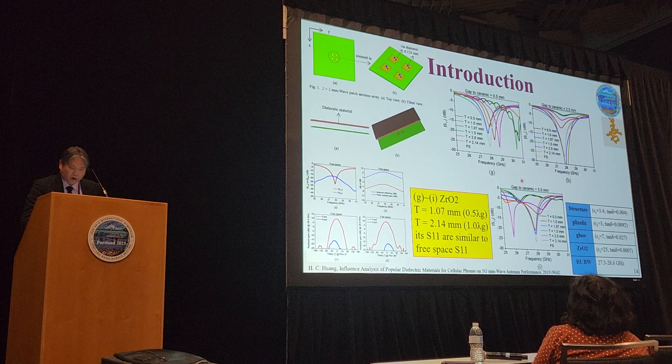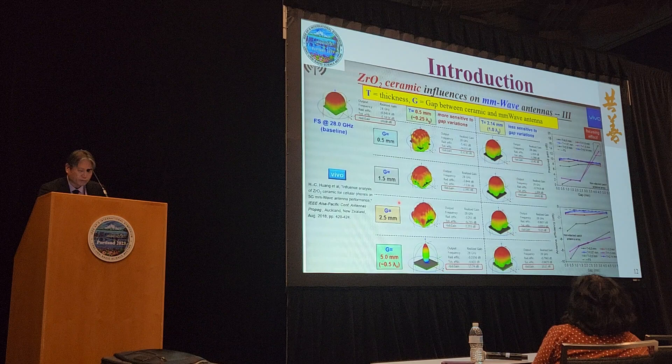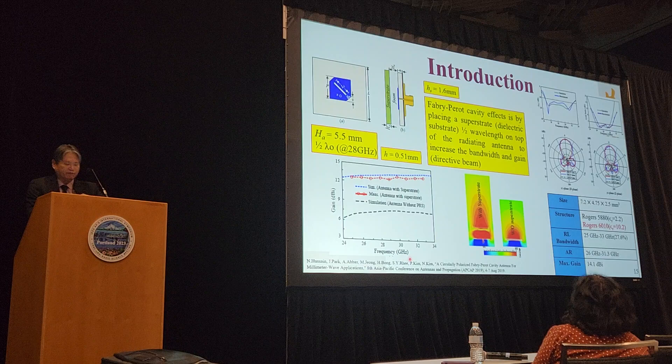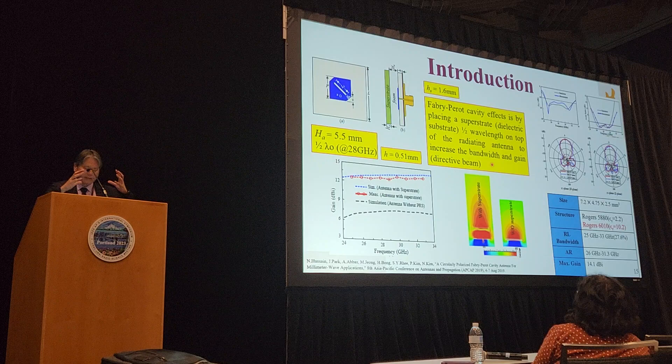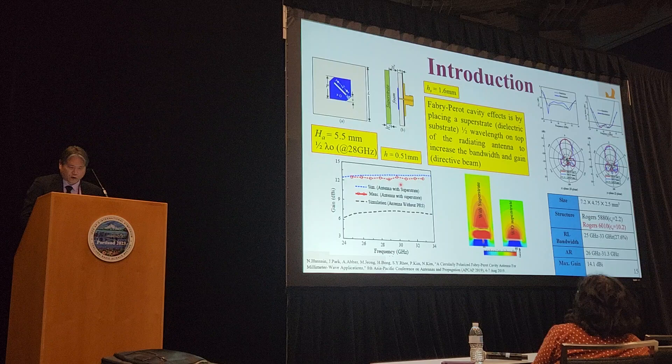As for the effect seen when you have an air gap of 0.5 lambda g, what happens is you create what is called the Fabry-Perot effect. For the Fabry-Perot cavity effect, by placing a substrate about half the wavelength — lambda 0 — on top of the radiating element, the radiation pattern becomes very directive. You get about 6 or 7 dB increase in gain, which is quite significant.